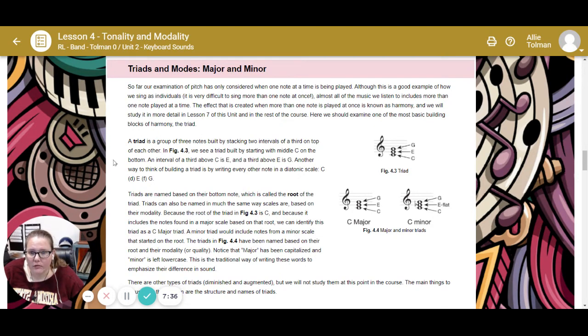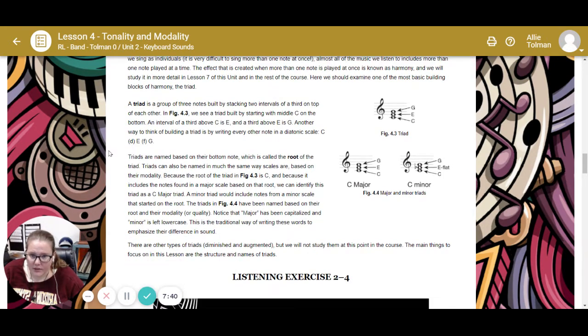A triad is a group of three notes built by stacking two intervals of a third on top of each other. In Figure 4.3, you see we built a triad starting on middle C on the bottom, an interval above that is an E, that's a third above it, and a third above E is a G. Another way to think of building a triad is by writing every other note on the diatonic scale: C, E, G, or the first, the third, and the fifth of that scale.